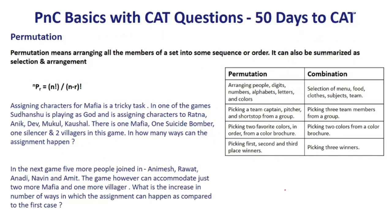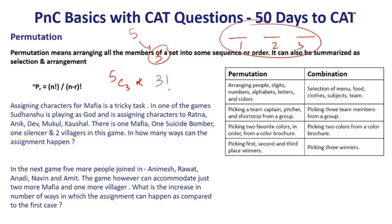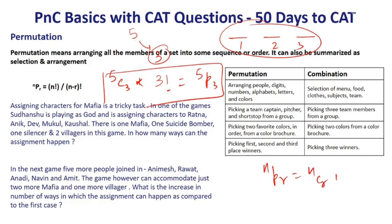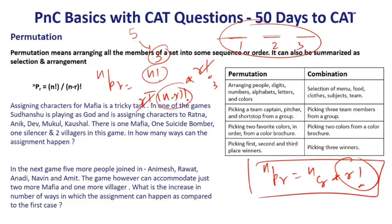Talking about permutation — permutation includes both selection and arrangement. For example, if I have 5 friends and want to select 3 and seat them in 3 positions: first select 3 out of 5 (5C3), then arrange them in 3 positions (3!). So 5C3 × 3! = 5P3. In general, NPR = NCR × R factorial.